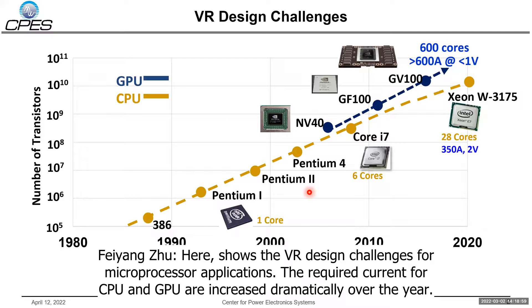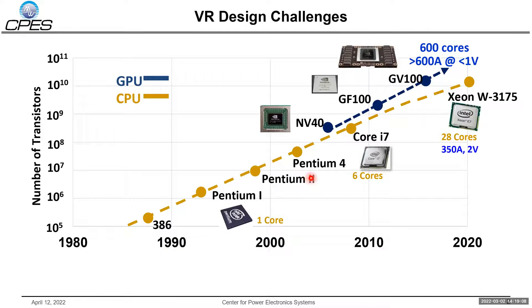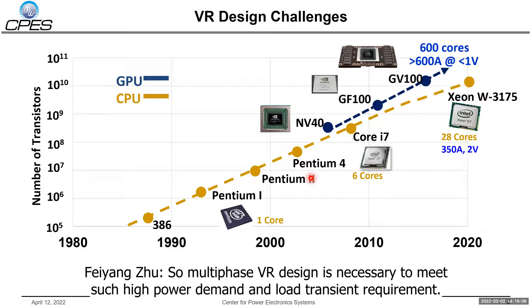Here shows the VR design challenges for microprocessor applications. The required current for the CPU and GPU has increased dramatically over the years, so multi-phase VR design is necessary to meet such high power demand and low transient requirements.